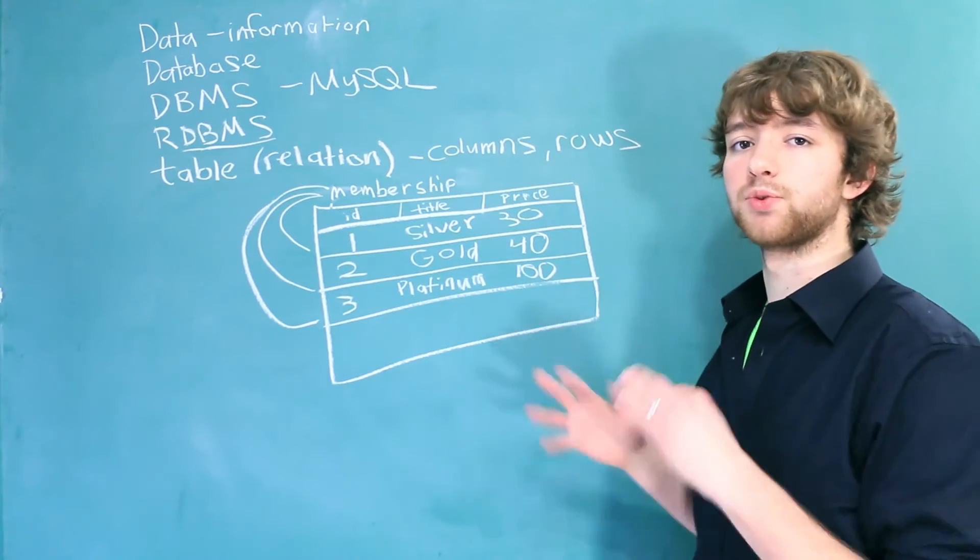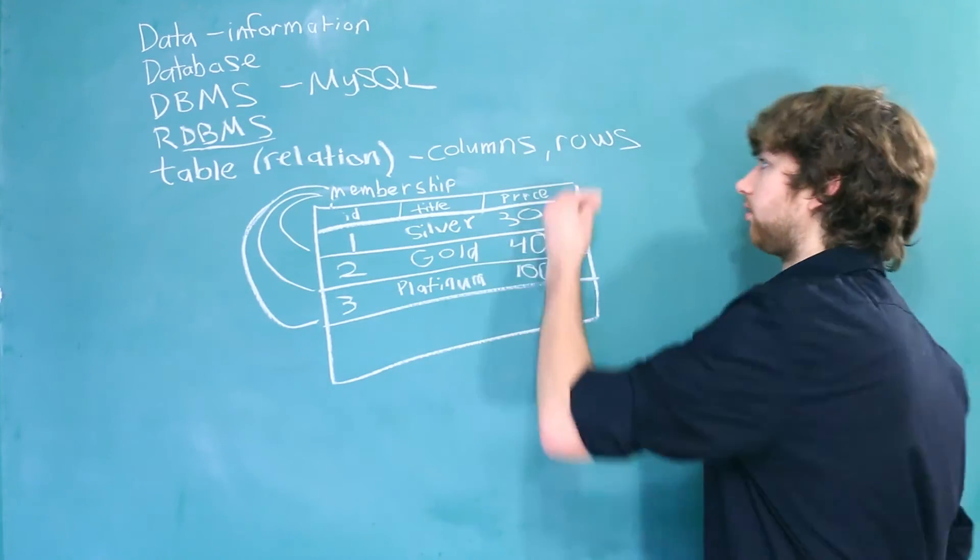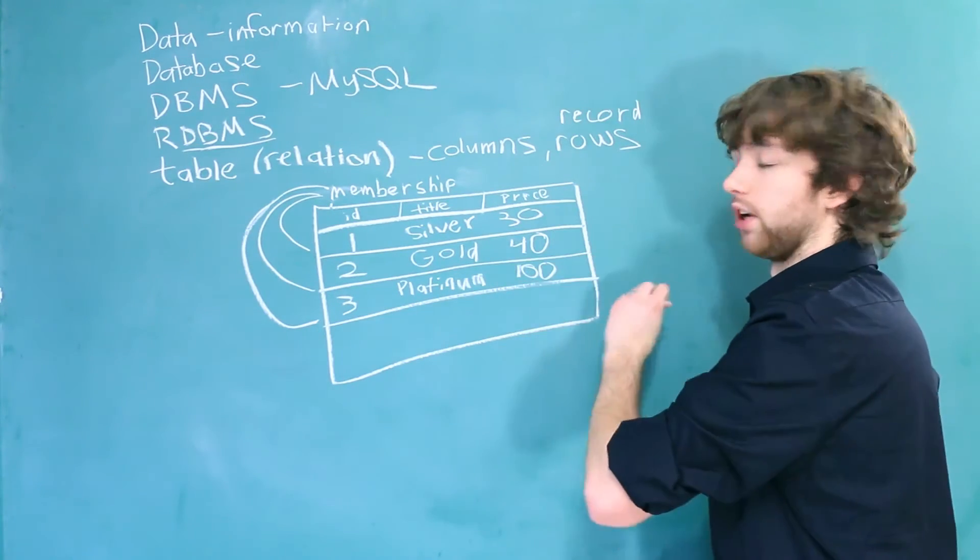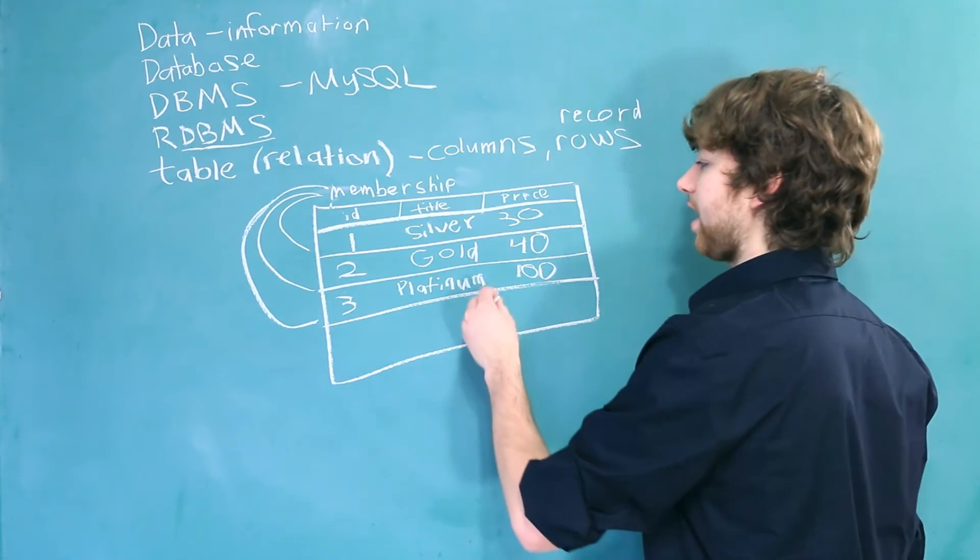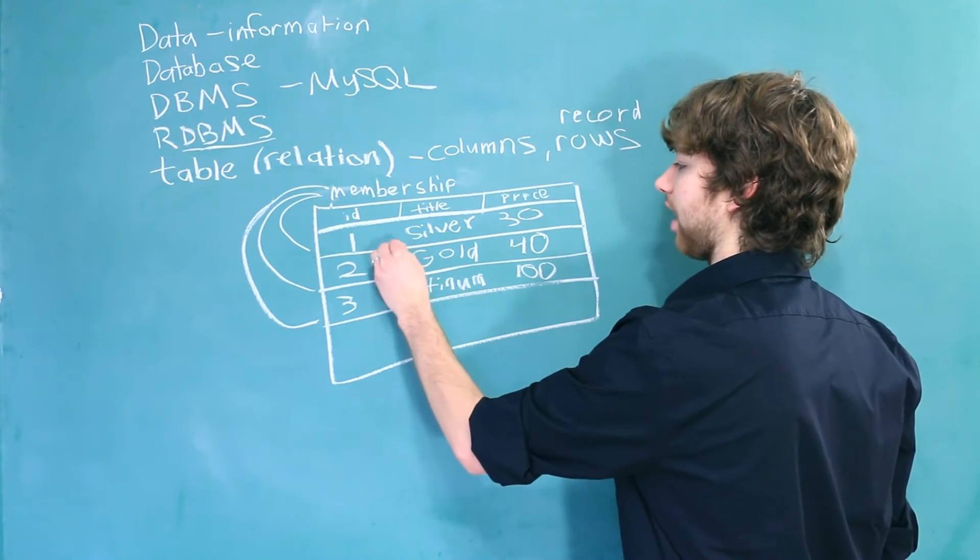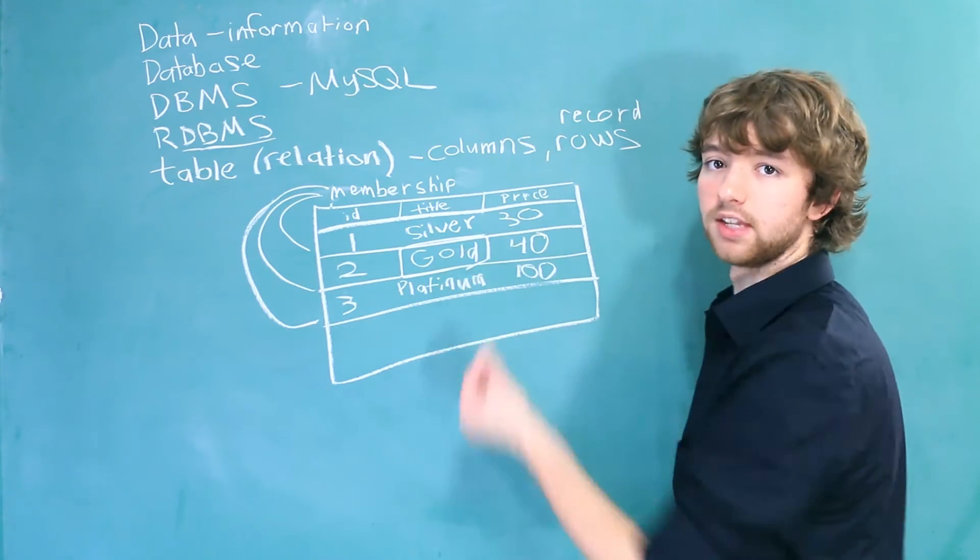You'll often hear a couple of other terms when we're talking about tables. One of those terms is a record. A record is just another name for a row. You'll also hear the term field, which that usually describes one value inside of a column. Or you could also call it a cell.